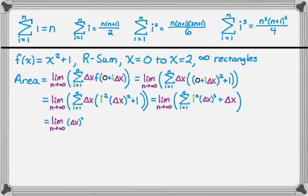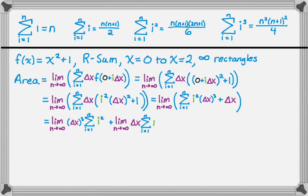I'm distributing the limit and the summation. Delta x does not depend upon i — delta x by itself is just 2 minus 0 over n, there's no i involved, so it's a constant and you can factor it out of the summation. So I pulled out delta x cubed and I'm left with the summation of just i squared, which we know. Then I factor delta x out again since it doesn't depend on i, leaving just the summation of 1.